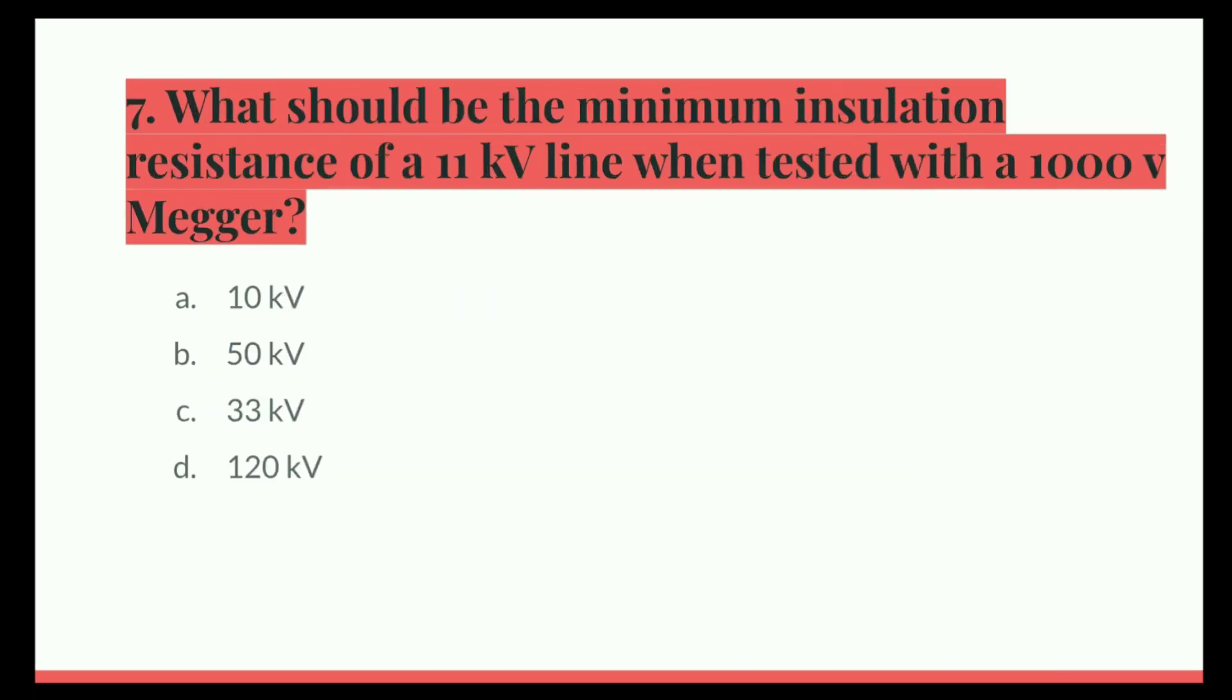Next question. What should be the minimum insulation resistance of the 11 kV line when tested with 1000 volt megger? Option A, 10 megaohm. B, 50 megaohm. C, 33 megaohm. D, 120 megaohm. And the correct answer is 50 megaohm.